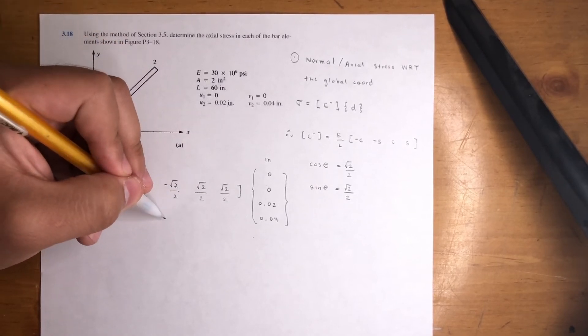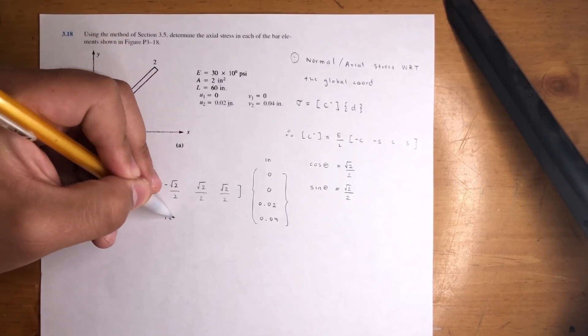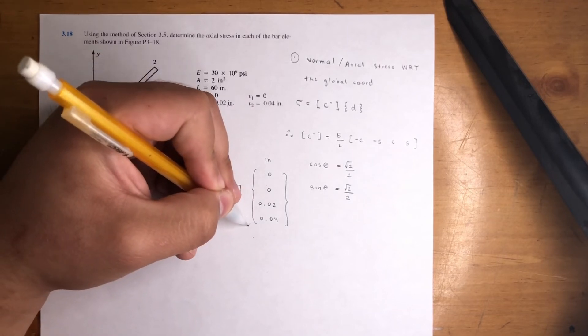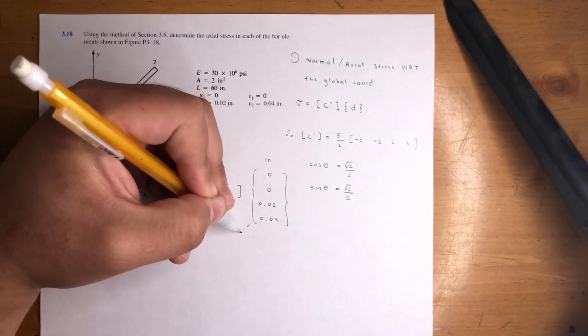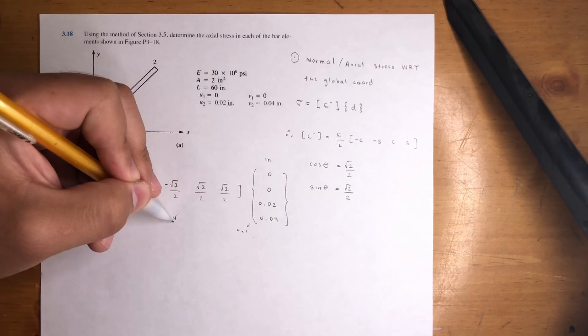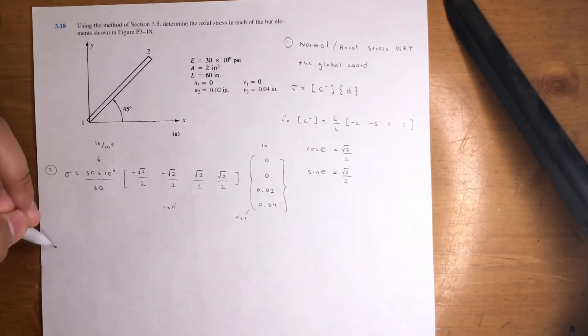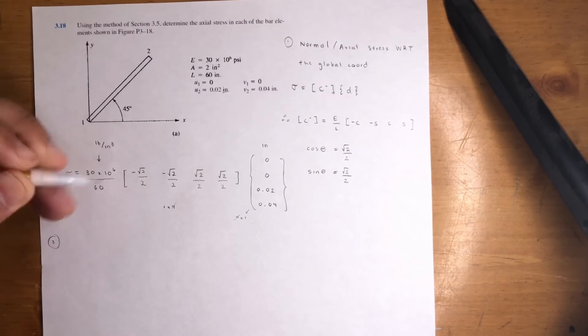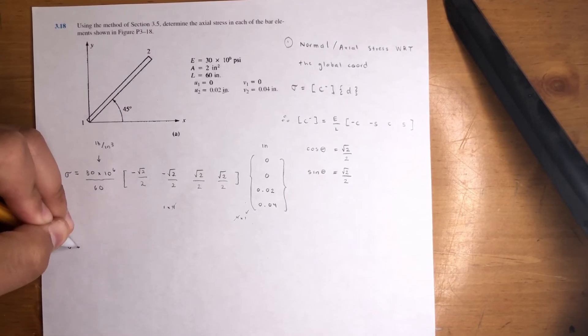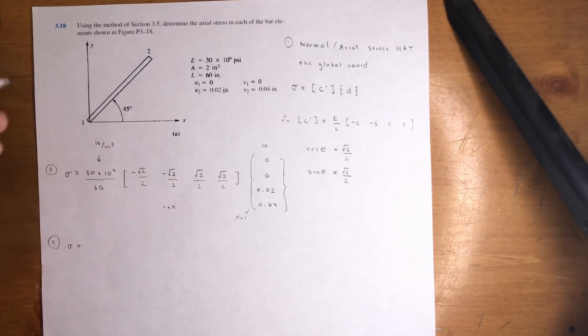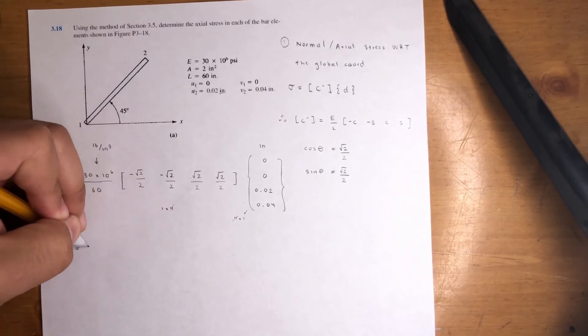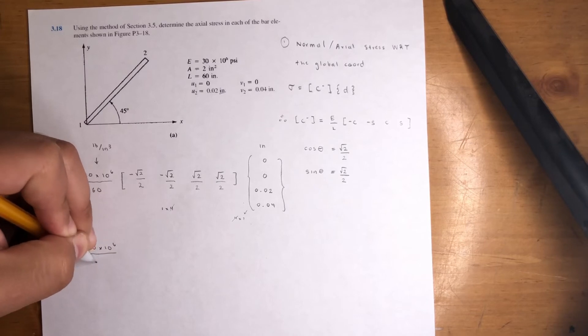This is a 1 by 4 matrix. This one is a 4 by 1, meaning when you multiply them, you're going to get a 1 by 1. That's all it is. So let's go ahead and do the next step. Sigma—that means it's just going to get one answer. So you're going to have 30×10^6, I'm going to leave that alone for now, divided by 60.